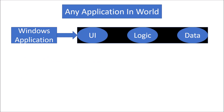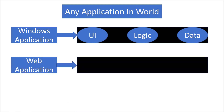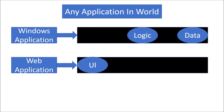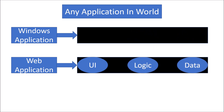Let's understand this with a slide. Any application — let's say a Windows application — consists of three things: UI, logic, and data, and nothing else. Let's say you have a web application and you want to use the same UI which you wrote for the Windows application. In WPF, you should be able to use it because WPF is designed that way. So you should be able to use the same UI, and if you want to use the same logic and same data, you should be able to use that also. This is what we mean by decoupling the UI, logic, and data from each other.